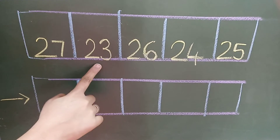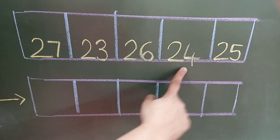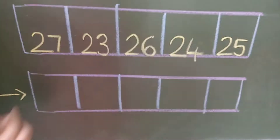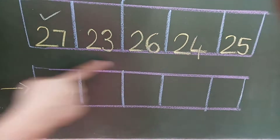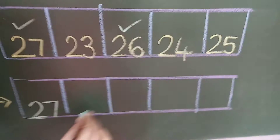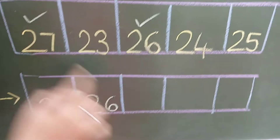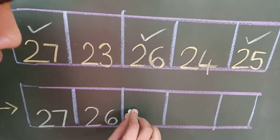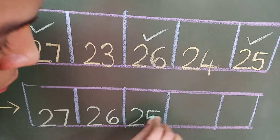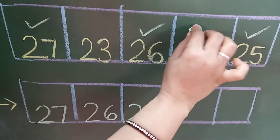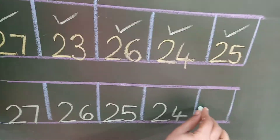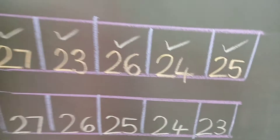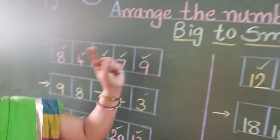Now let us see here. Read the numbers: number 27, 23, 26, 24 and 25. In these, which is the biggest number? Number 27. 27 before — which number will come? 26 is there — yes. So put a small tick on that and write down here number 26. Then which number? 25. Then which number will come? 24. Then 24 before which number will come? 23 — yes. So students, we have arranged these numbers in descending order.